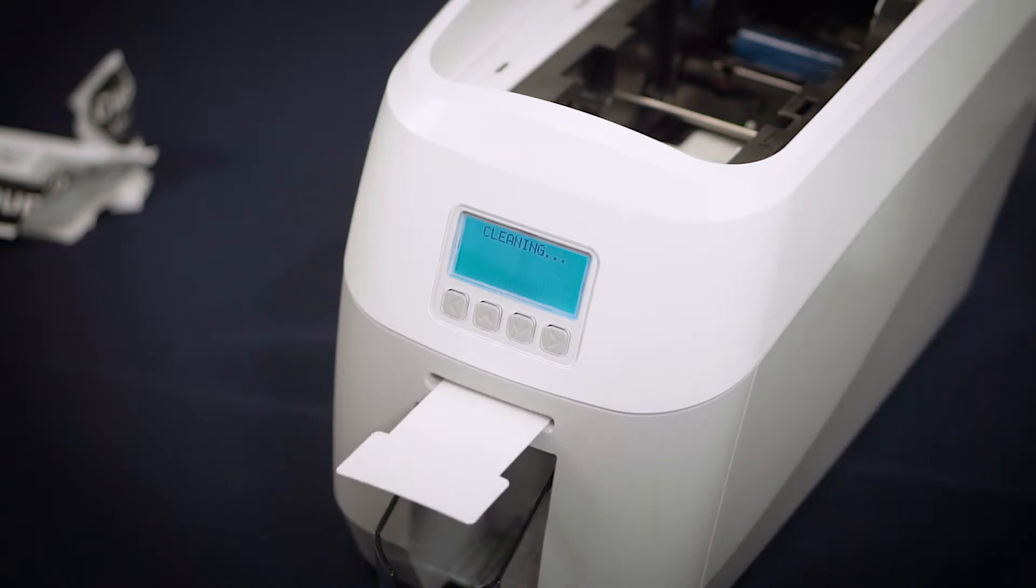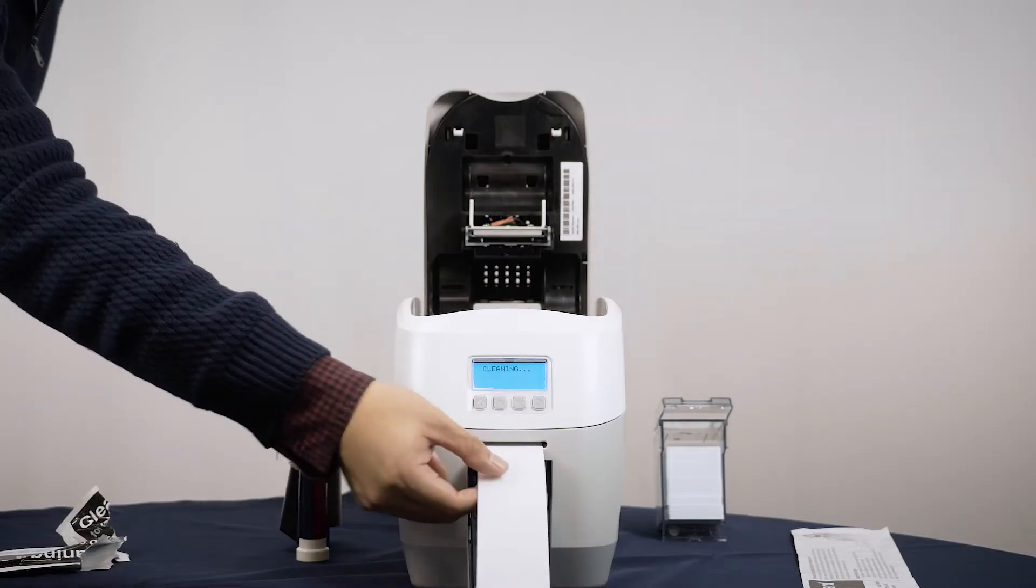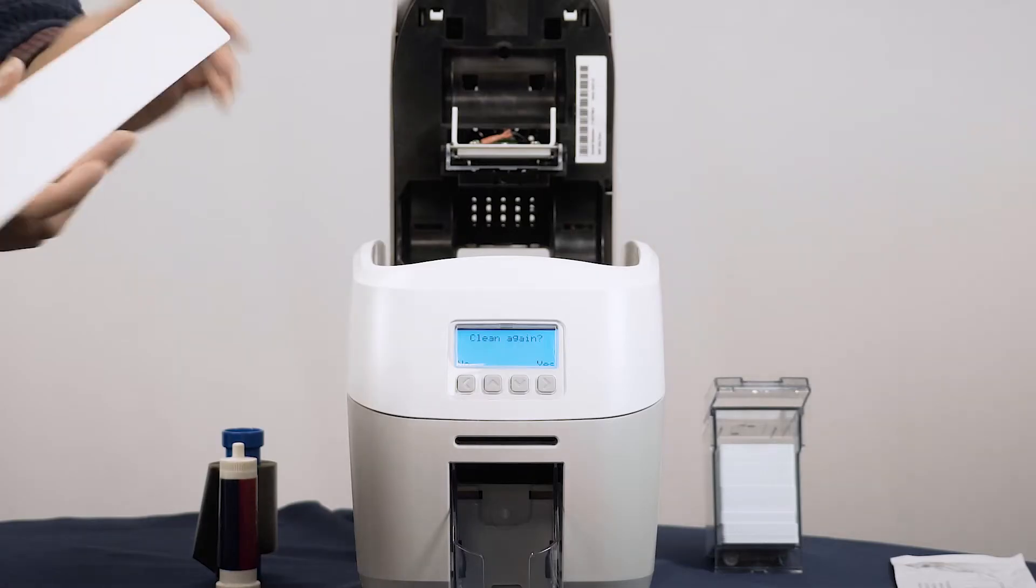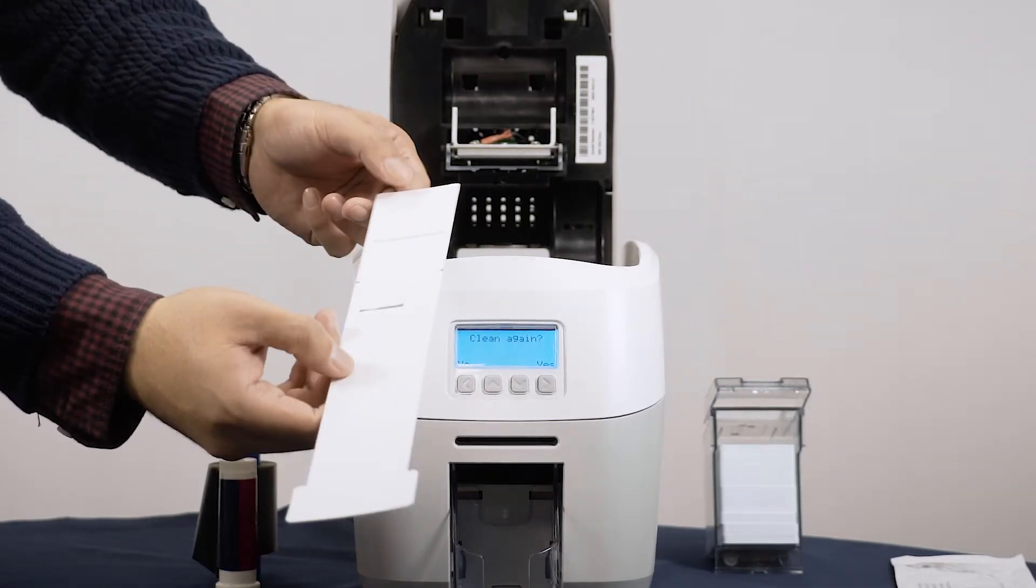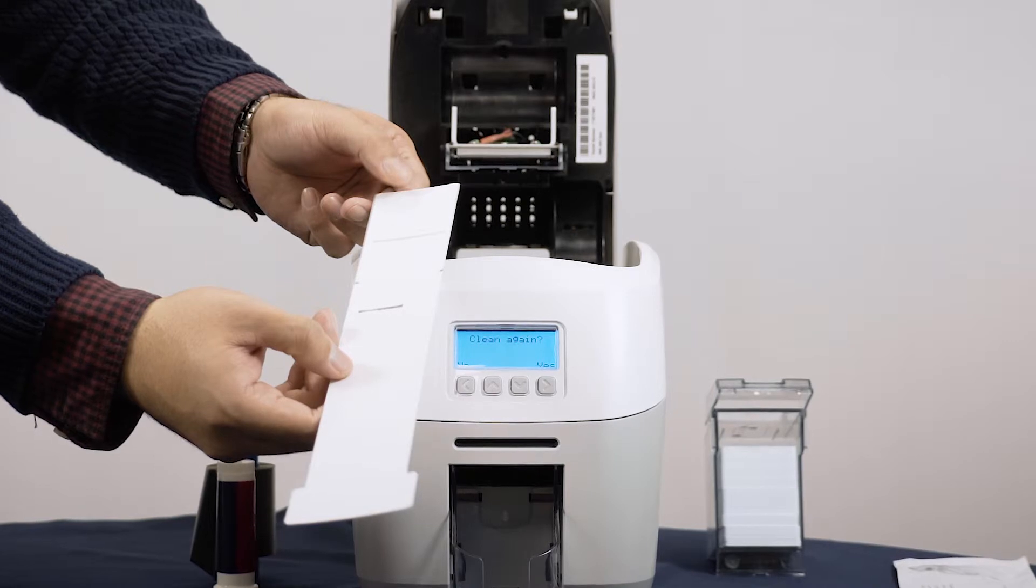The card will eject and reinsert itself a number of times. It will eject the whole card once complete. Turn the card over. You will see the dye and dirt that has been removed from the rollers.